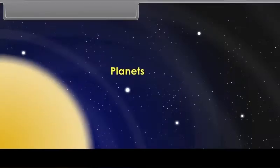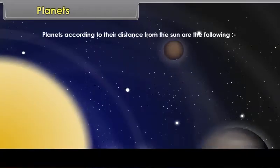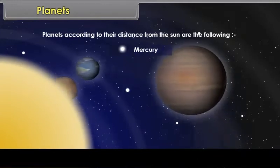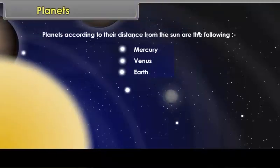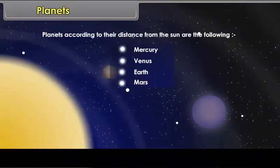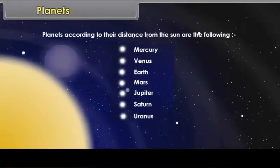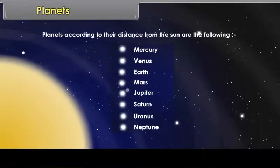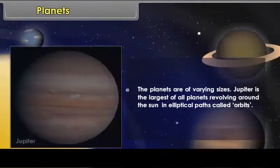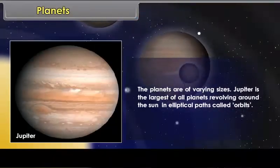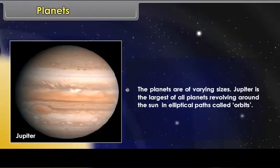Planets. Planets according to their distance from the Sun are the following: Mercury, Venus, Earth, Mars, Jupiter, Saturn, Uranus, Neptune. The planets are the largest of all celestial bodies revolving around the Sun in elliptical paths called orbits.